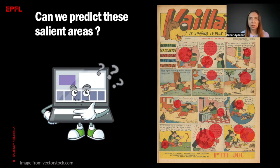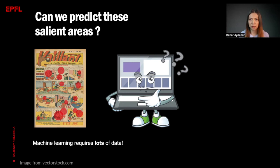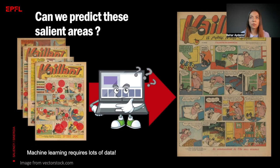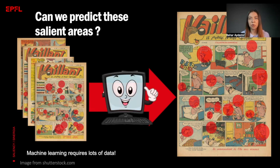We have used machine learning to tackle this problem. Machine learning is a branch of artificial intelligence which focuses on the use of data and algorithms to imitate the way that humans learn, but it requires a lot of data. So we collect data from many readers and many different comic pages to train a machine learning model. Then the model can predict regions that are likely to gather more attention in a completely new comic page. That is, we do not need to carry out experiments for new pages since the computer can tell us the salient regions.